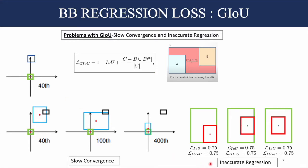Regarding the inaccurate regression problem of GIOU: if we consider three cases where the green box is the ground truth and the red is the predicted box, the GIOU loss and IOU loss are the same across all three cases, meaning there is no gradient to differentiate them. But ideally, we want to recognize that the case where the center points of the two boxes coincide is a better situation.